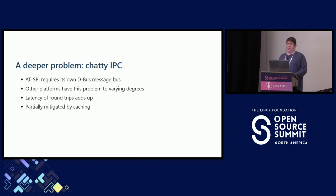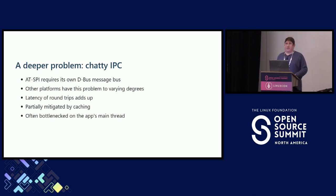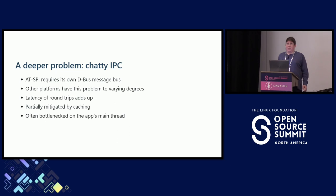The latency issue is partially mitigated by caching features built into ATSPI and, in the case of Windows, into UI Automation. But that's only a partial solution — in particular, in both of these protocols, it doesn't cover all of the things that you want to be able to do with text. Another problem is that this IPC is often bottlenecked on the main thread of the application. If the main thread is busy doing something else, then screen readers in particular make that application feel unresponsive when a blind person is using it in a way that it doesn't feel unresponsive to a sighted person.